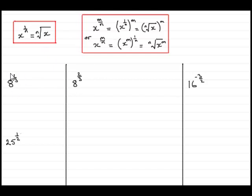For the first example here, 8 to the power of a third, and for 25 to the power of a half, what we do is we use this first law, that x to the power 1 over n is equal to the nth root of x. So for this first example, 8 to the power of a third, the x is the 8 and the n is the 3. So this is going to be the third root of 8.